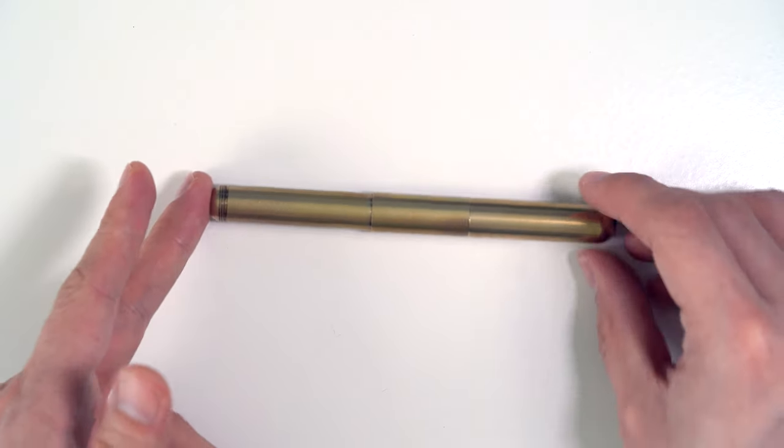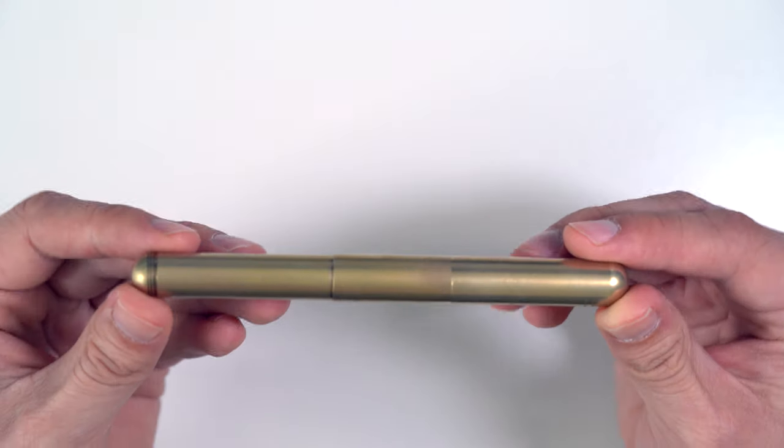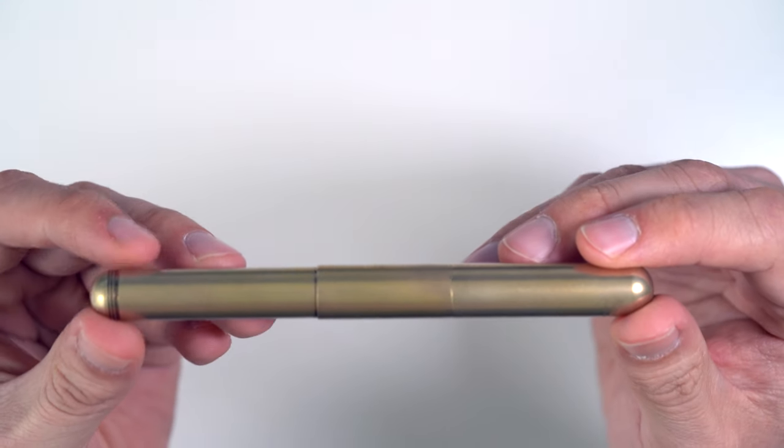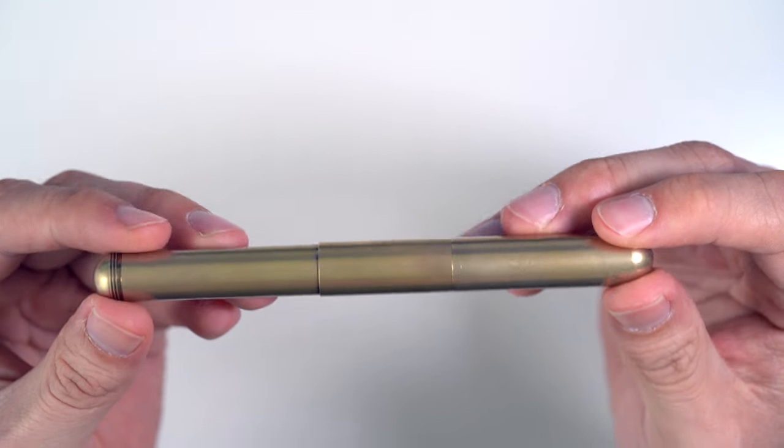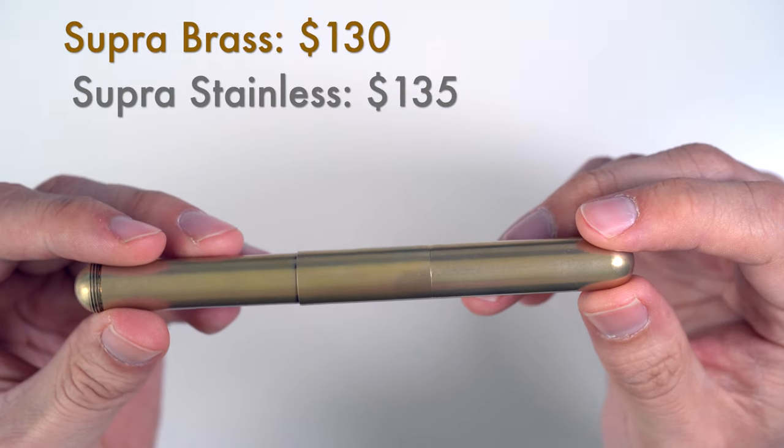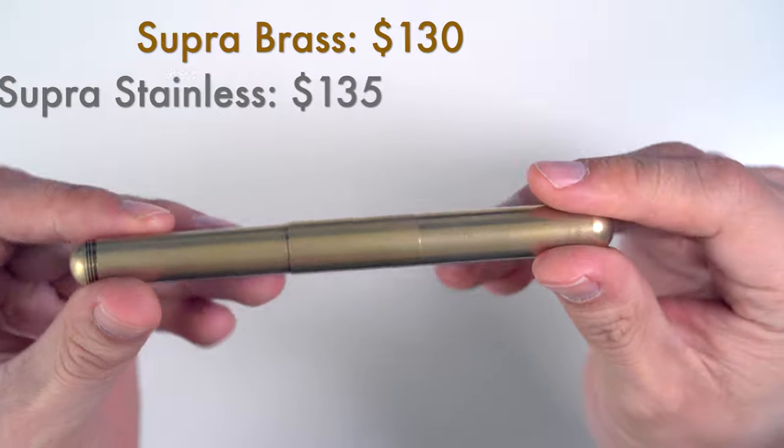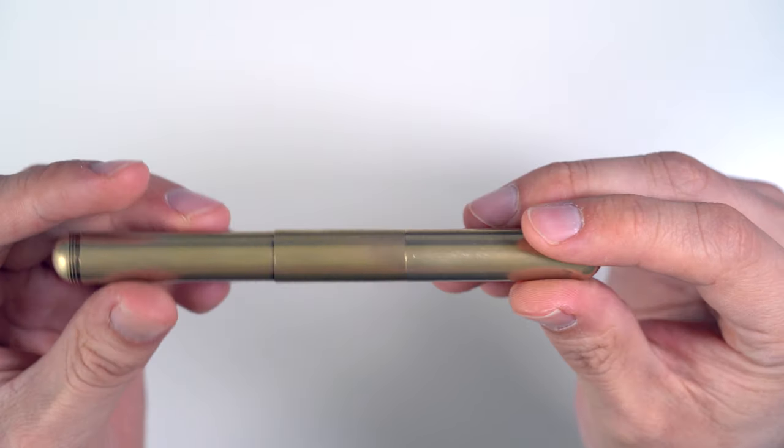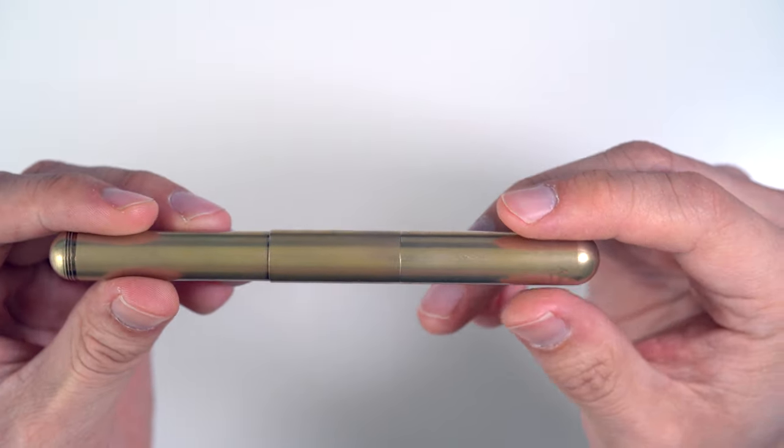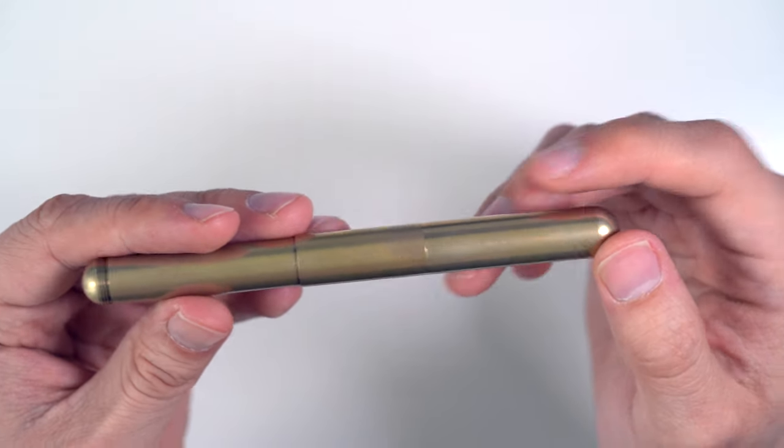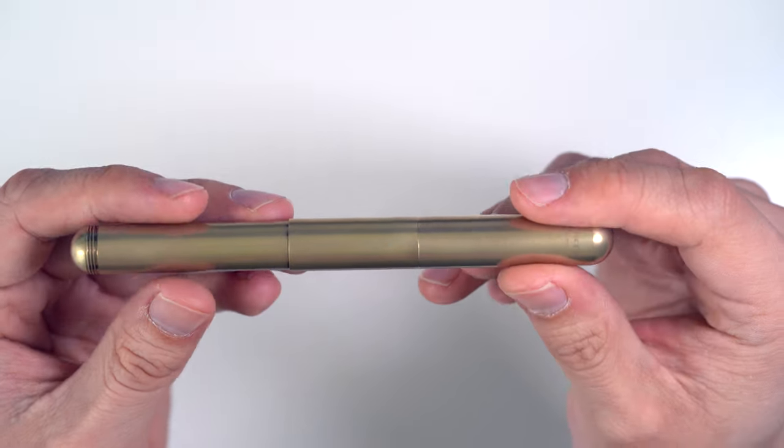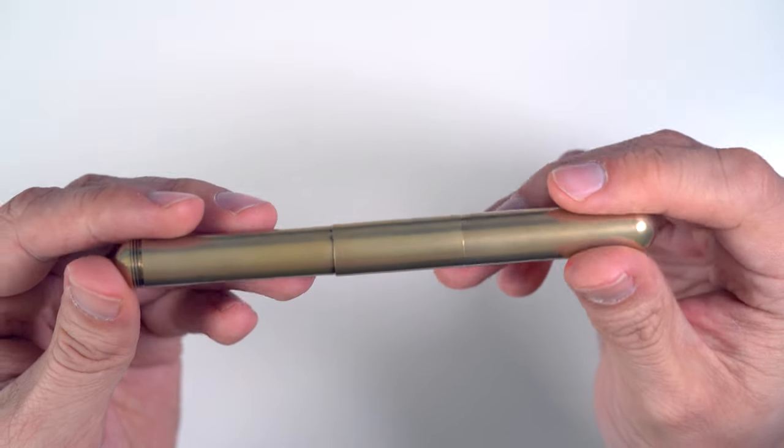Alright, let's get on with the review. This is the Kaweco Supra Brass. This is a very minimalistic fountain pen. It comes in stainless steel and brass like I have here. I believe the stainless steel is a little bit more expensive, but in my opinion, unless you really like stainless steel, the brass is the one to get. It's very minimalistic. It's made of what they call an eco-brass, which is a lead-free brass produced by Violent Werke in Ulm, Germany.